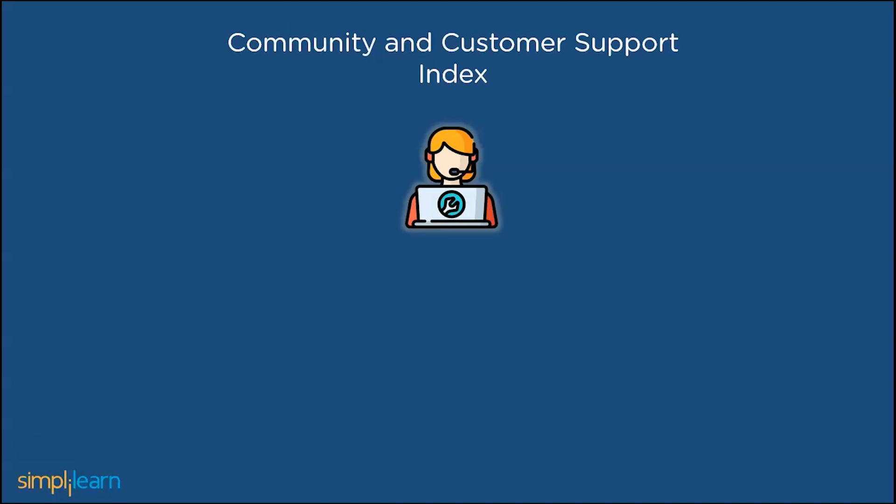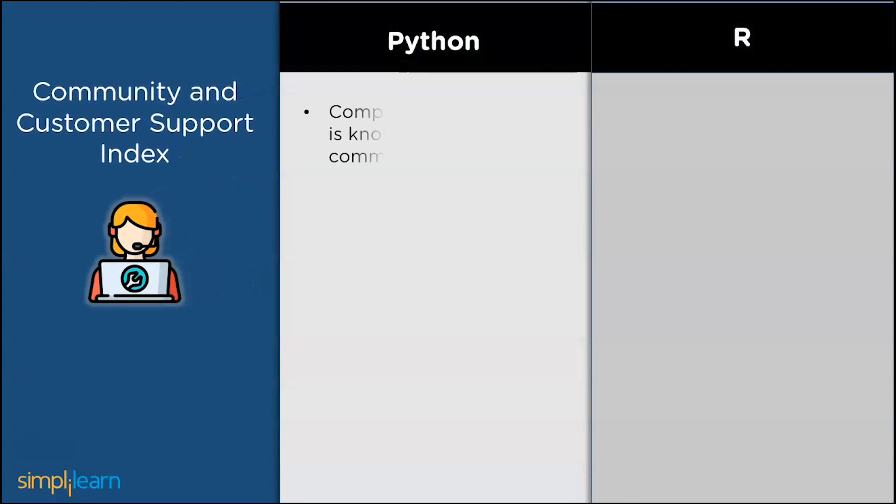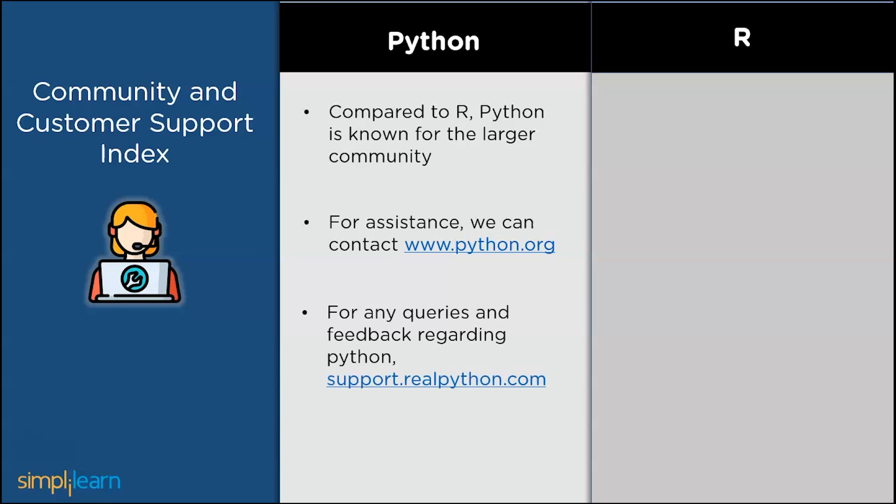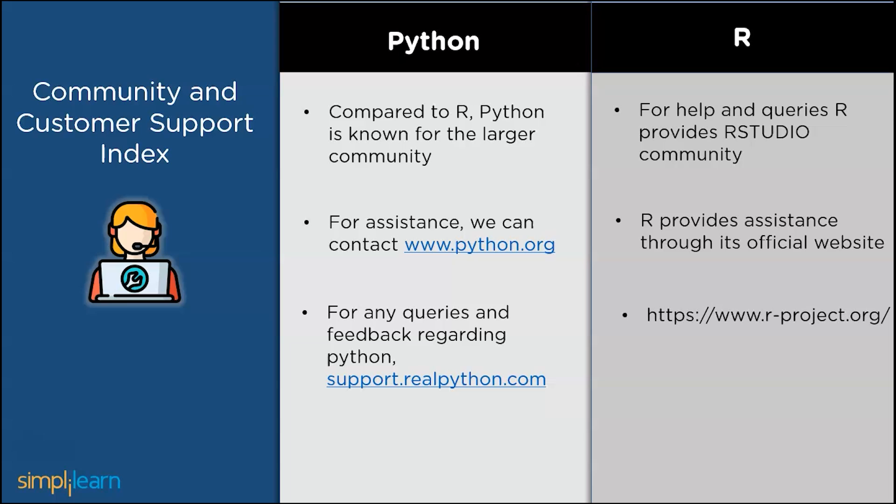Community and customer support offered by Python and R. Compared to R, Python has a larger community. For assistance, we can contact www.python.org. For any queries regarding Python and help, you can visit support.realpython.com. For any help and queries, R offers you the R studio community. R provides assistance through its official website. For queries and community related issues, we can contact www.r-project.org.